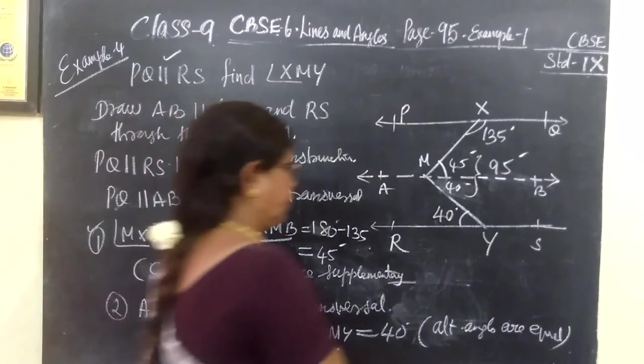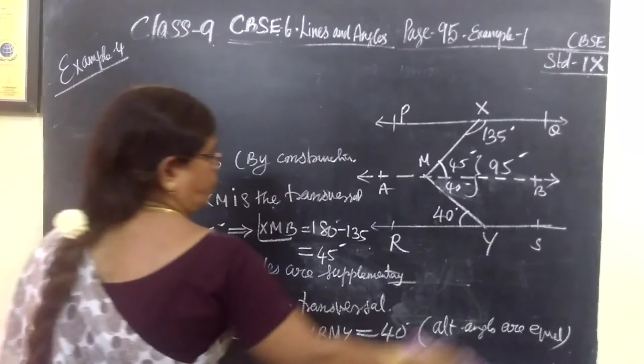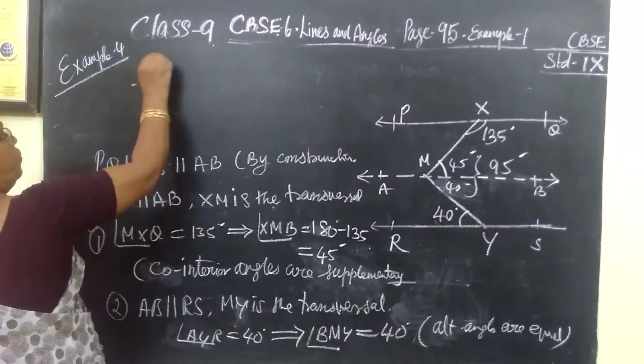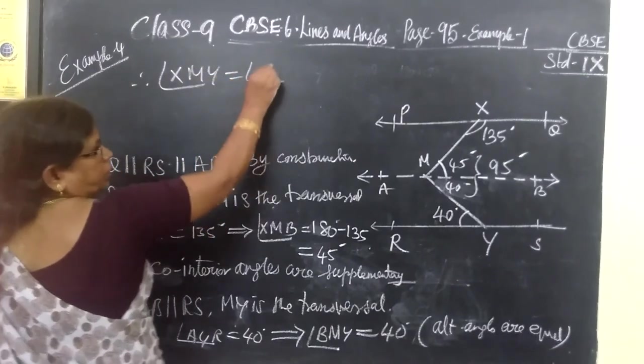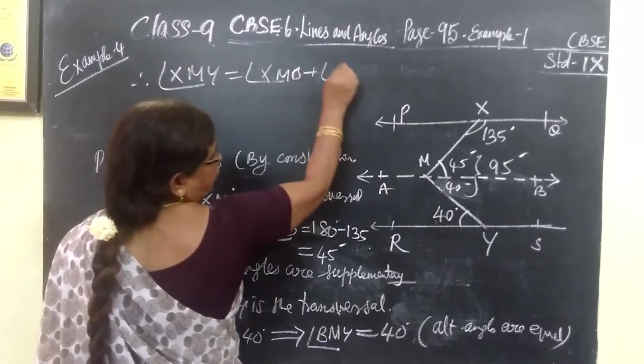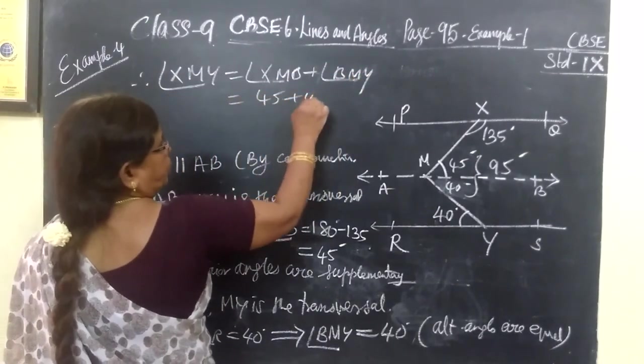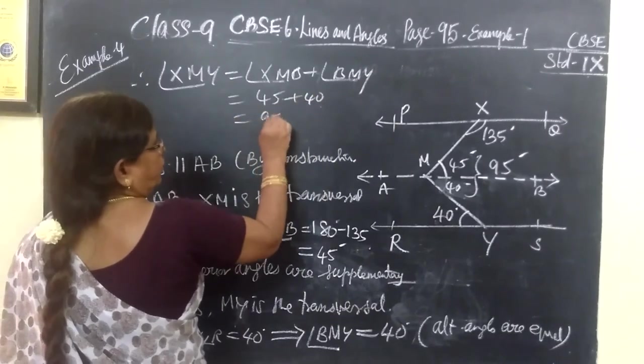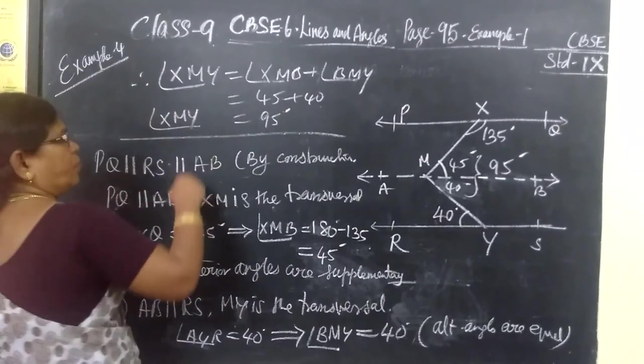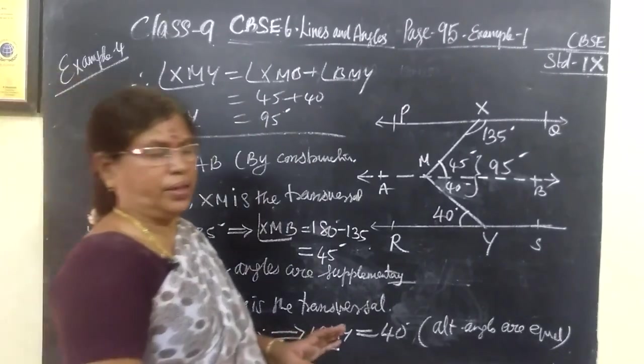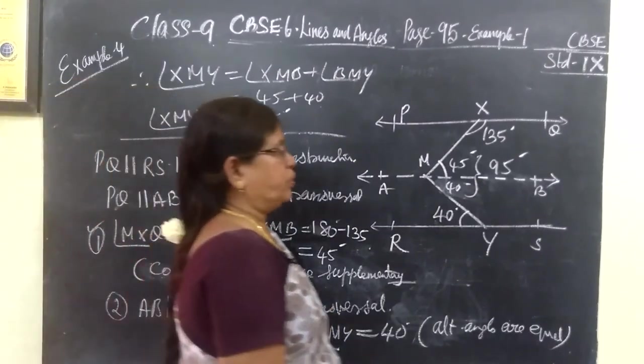So you are adding the whole angle XMY. Therefore angle XMY equal to XMB plus BMY equal to 45 plus 40 equal to 95. So just looking at the sum itself, we come to know the answer. But we have to write the full step. For that you are getting full mark. Thank you.